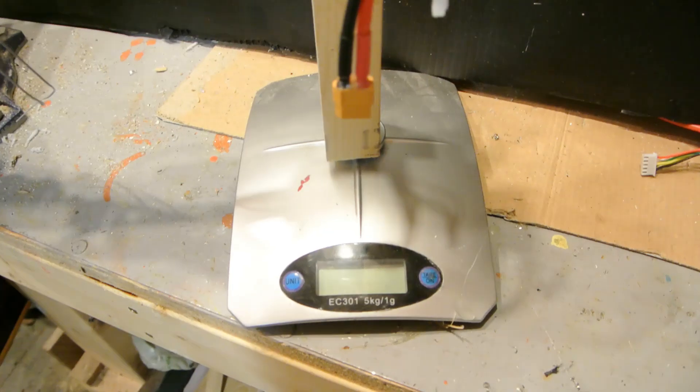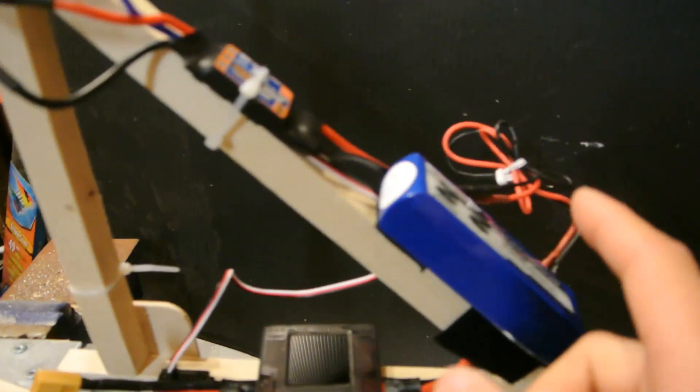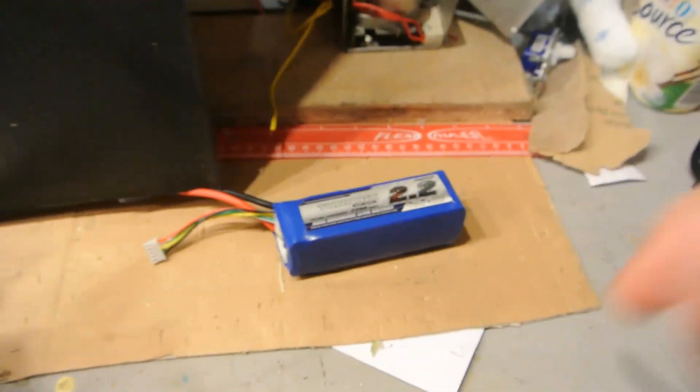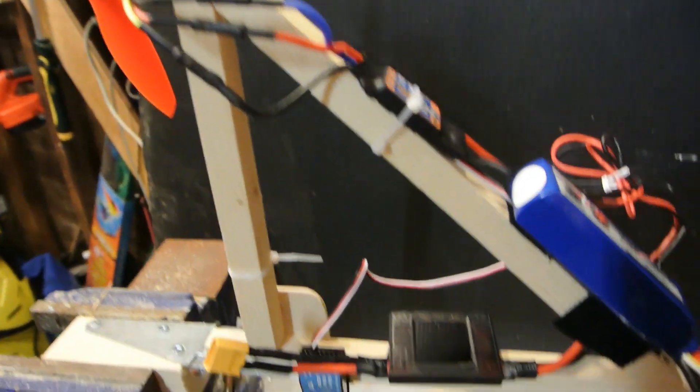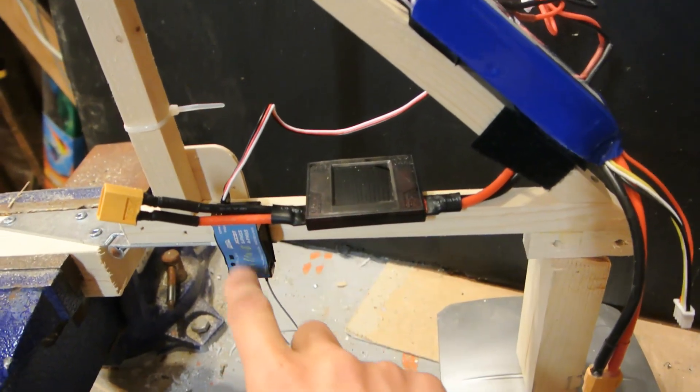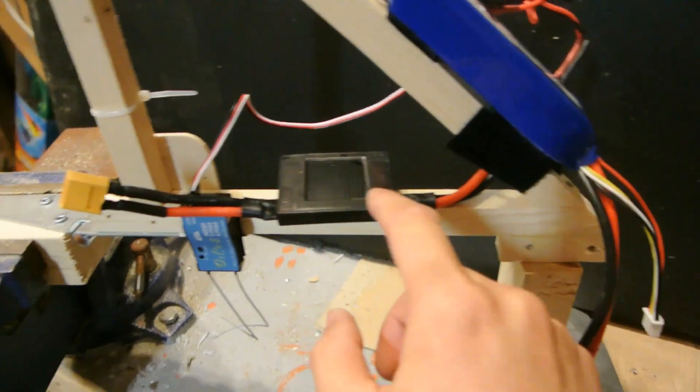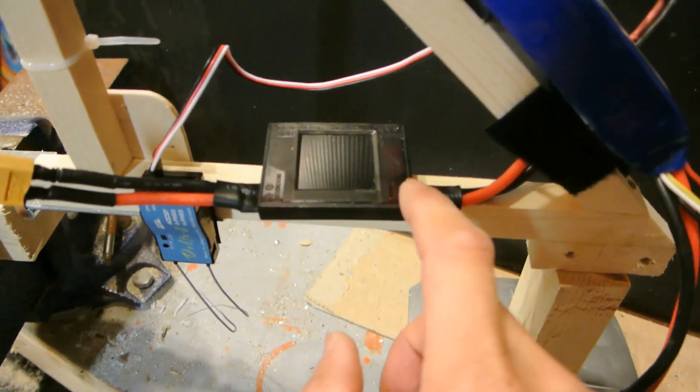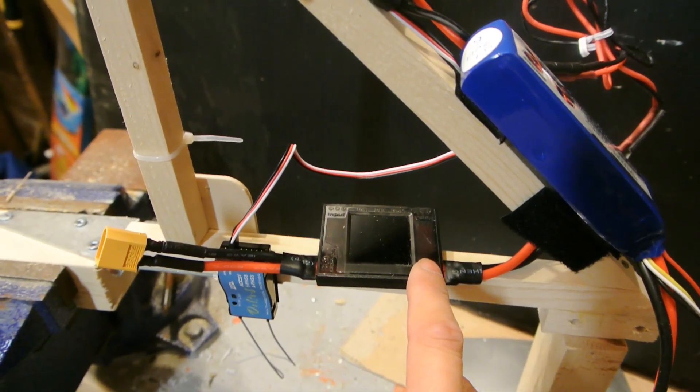I have it hooked down to a scale which I'll zero out. I'm going to use a 3S and 4S. I have my ESC hooked up to it running through to the receiver, and then I have the ESC hooked up through this amp and watt meter.